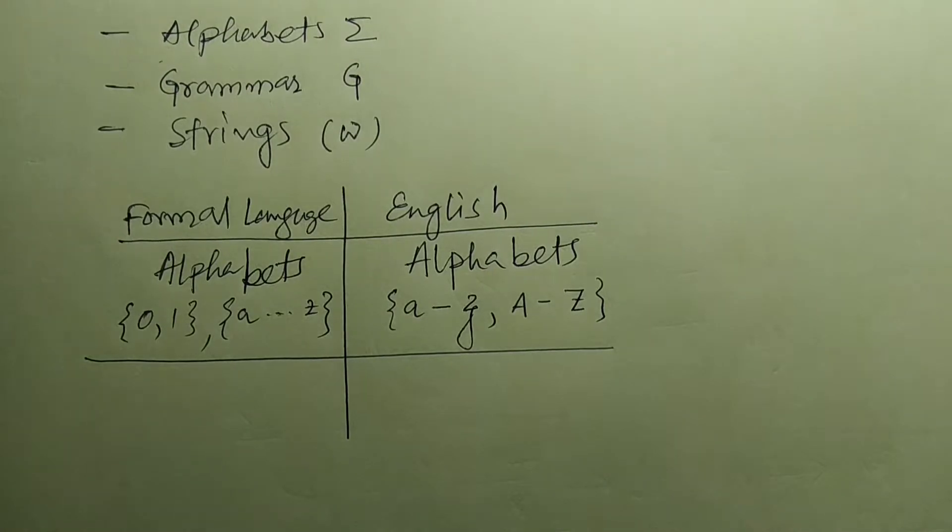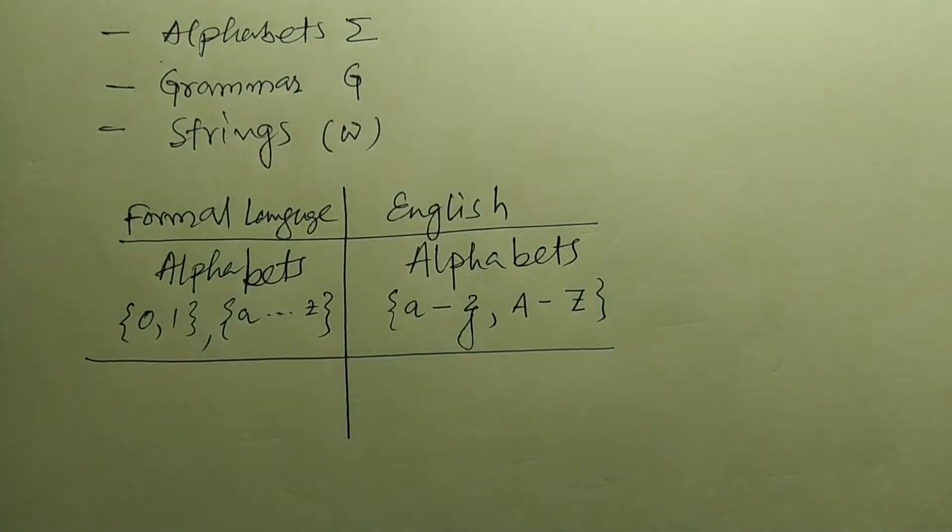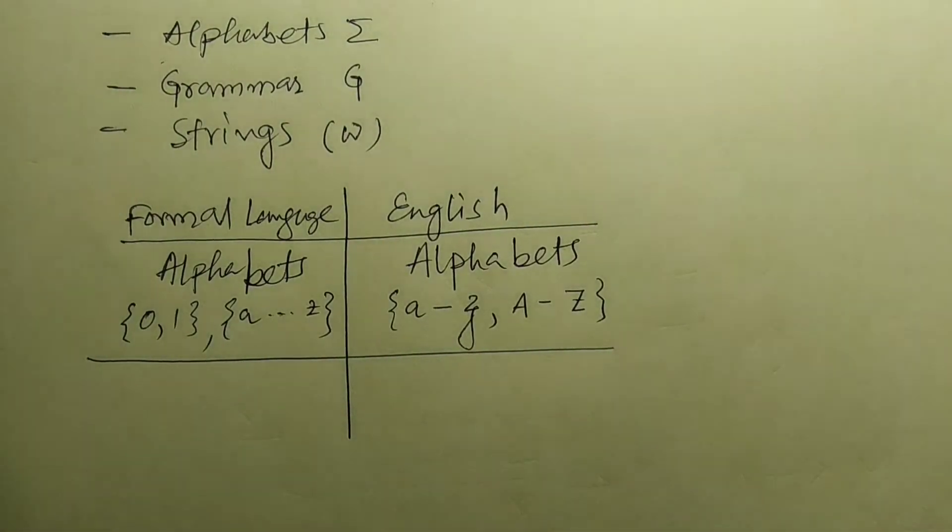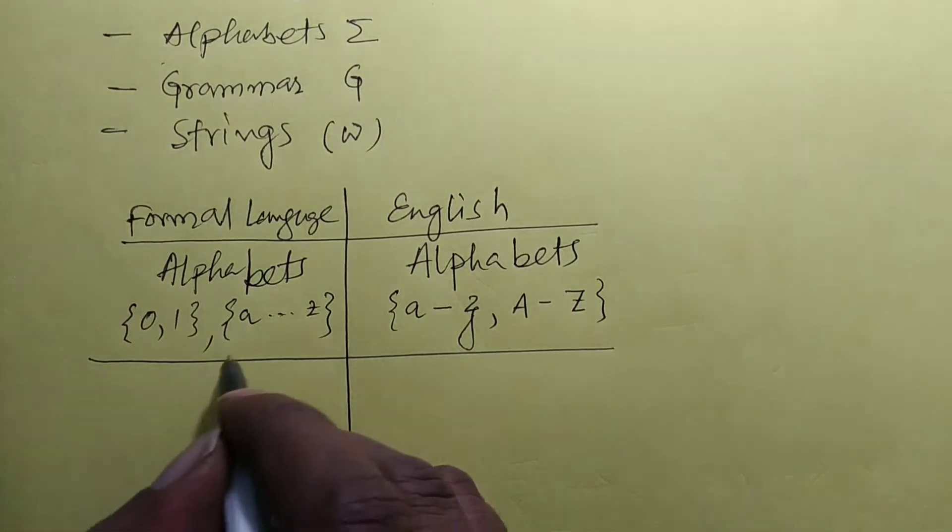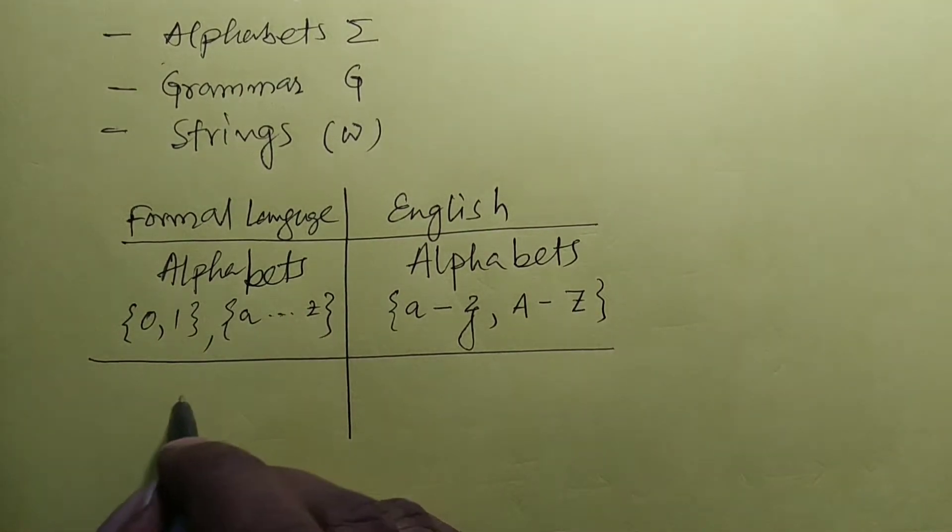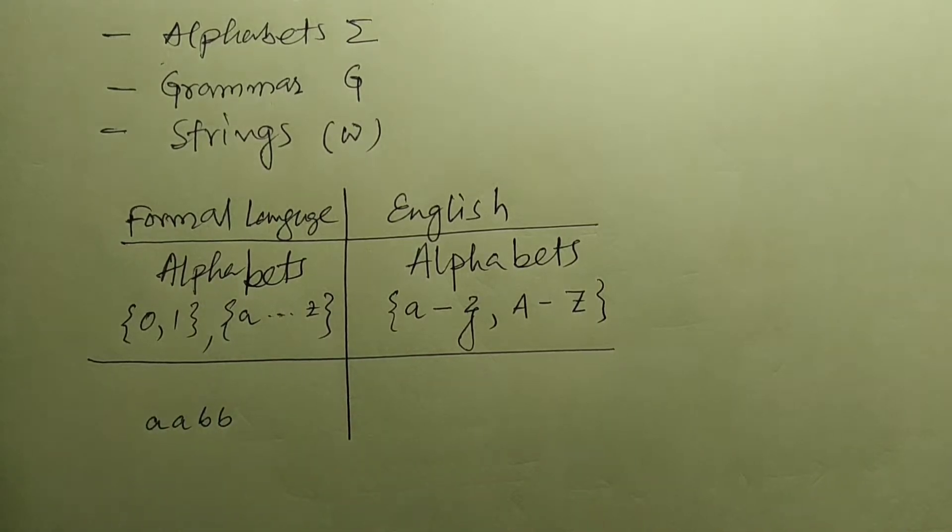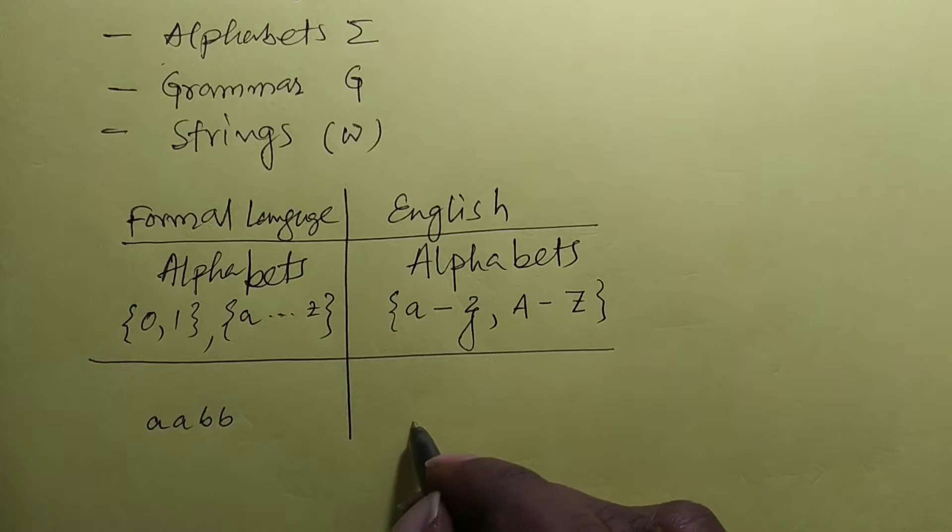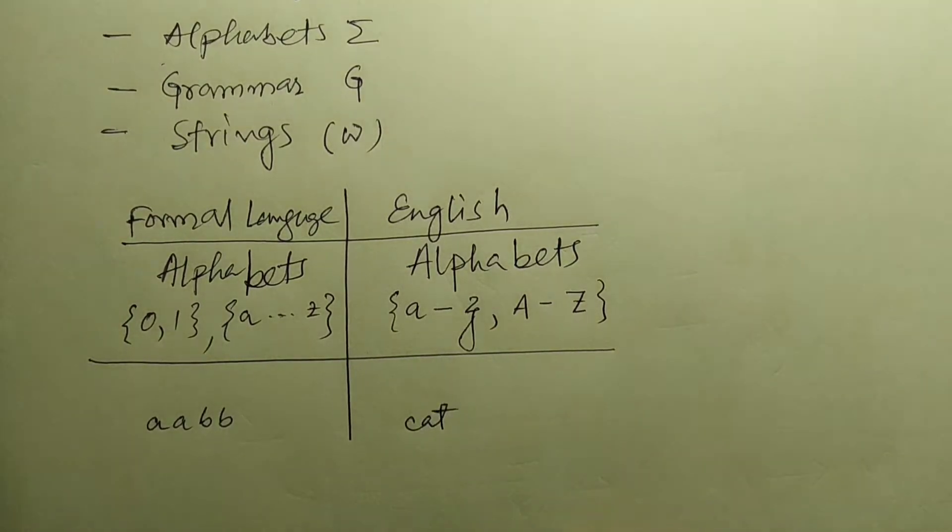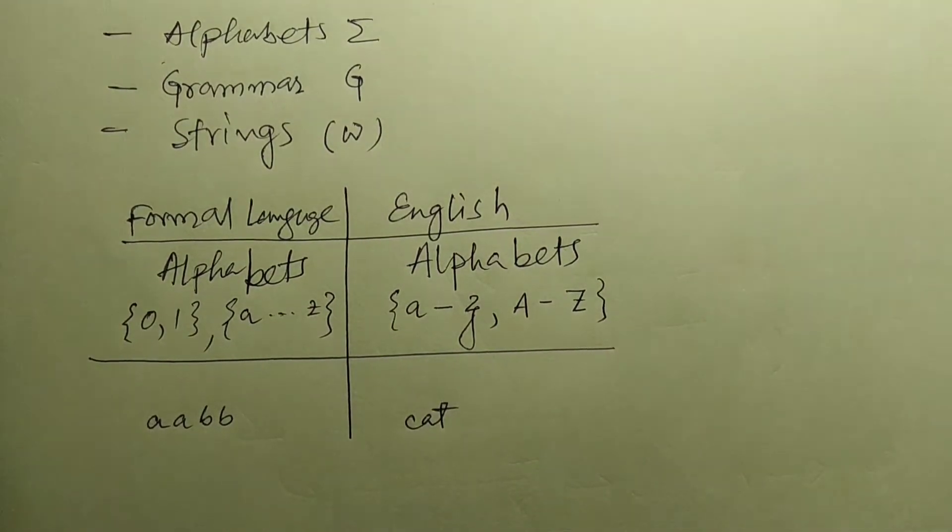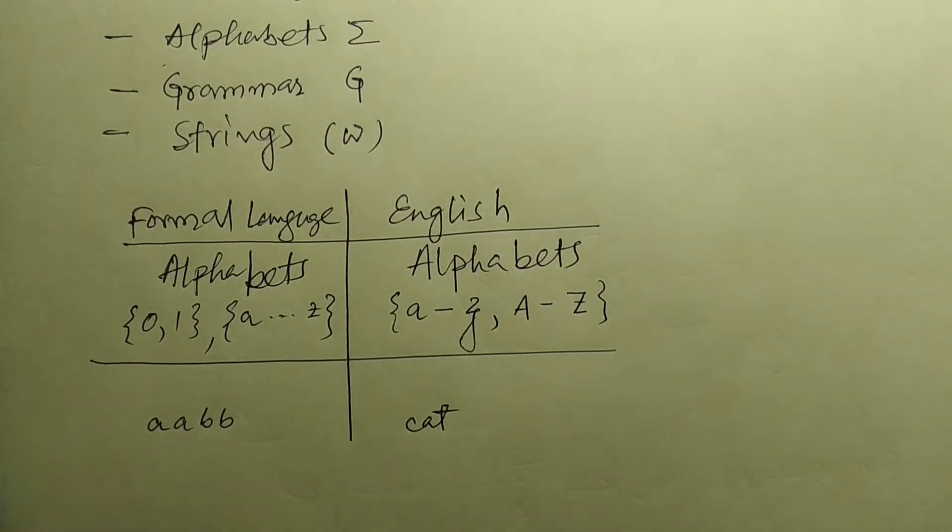Say here in formal languages we write a a b b, this will be called as string. Here we write cat in English, it is called as string. So both cases it is string.